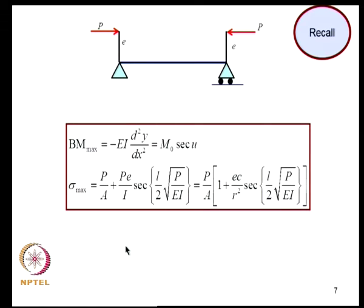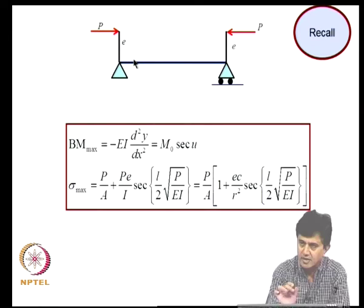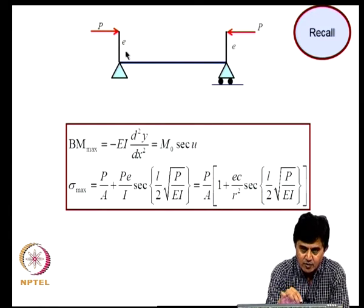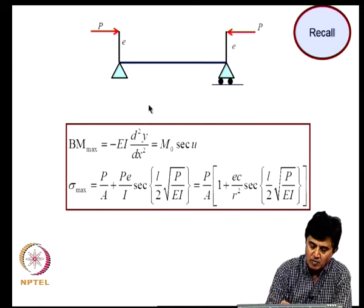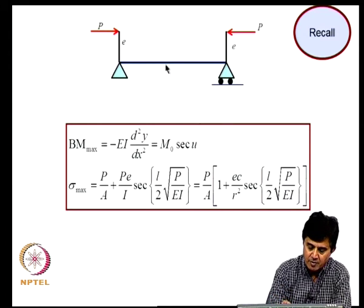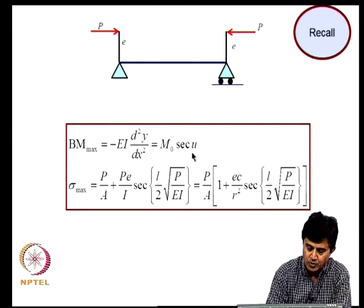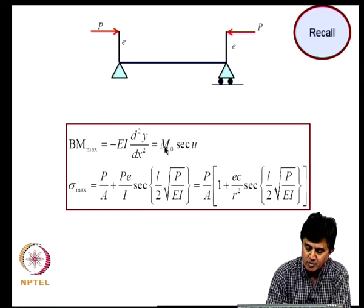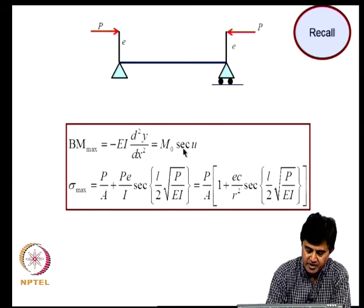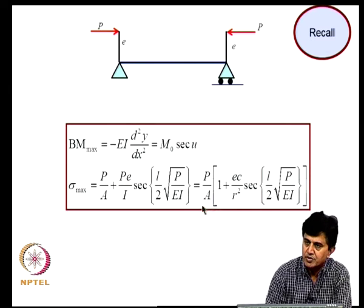We also considered eccentrically applied axial loads. In real applications one cannot apply axial loads truly axially, and one way of depicting that is a load applied with eccentricity E. The maximum bending moment in this case is given by M-naught times secant(U). Without axial load, M-naught would be the moment, but simultaneous presence of axial load introduces this modification factor. The resulting bending stress formula is commonly used in the design of steel structures.